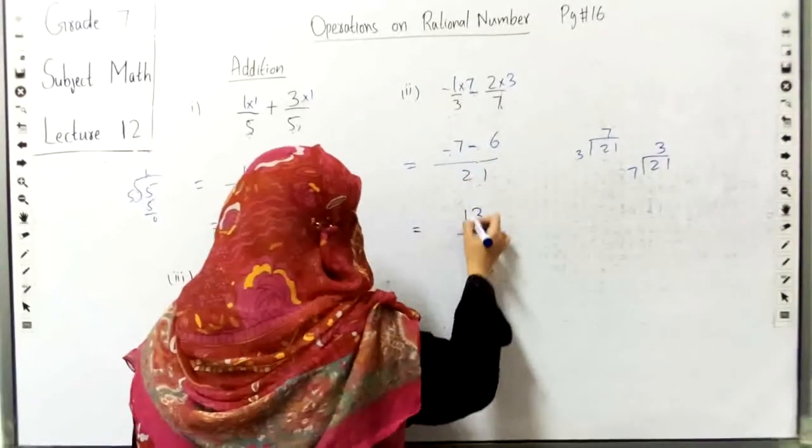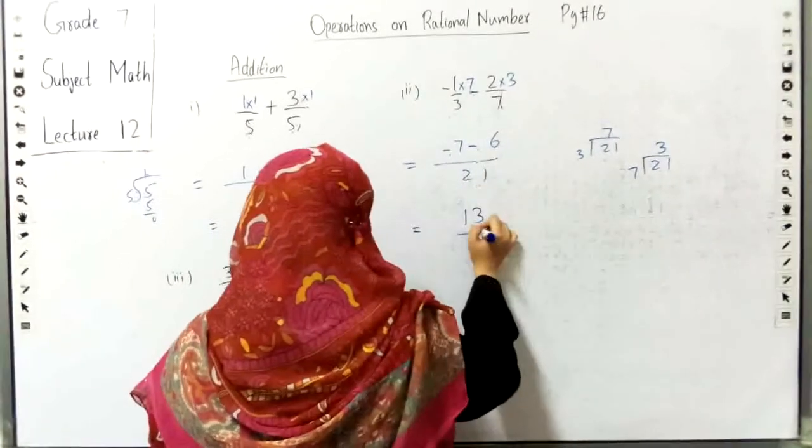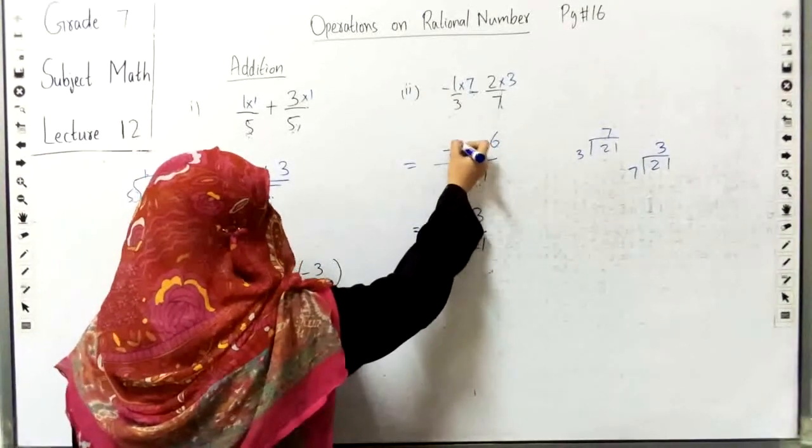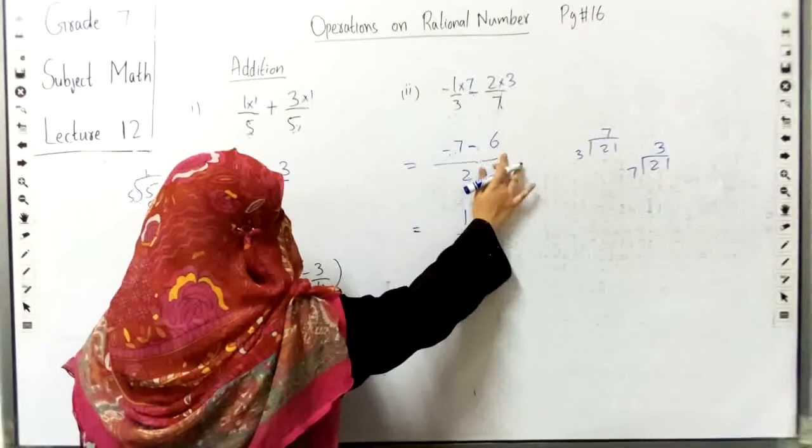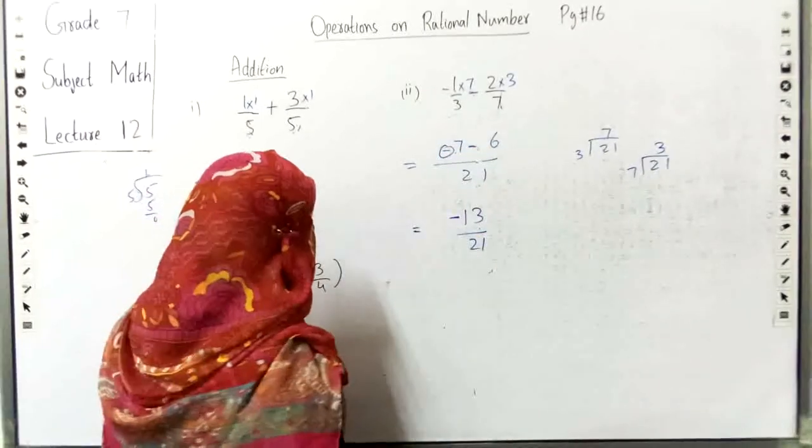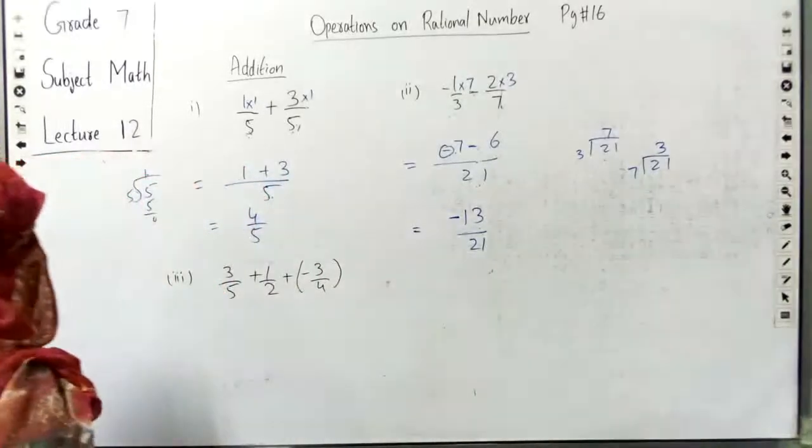So minus plus, here we have 13, we will add. Which is greater, here we have 7 greater than 6, so if we have minus then minus 13 by 21.